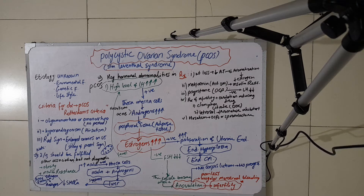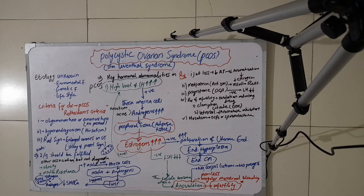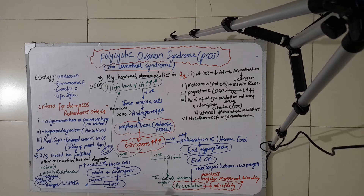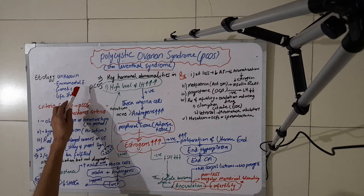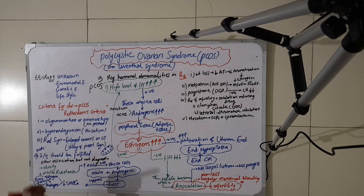In this video I am going to discuss about Polycystic Ovarian Syndrome or PCOS, also called Stein-Leventhal syndrome. The etiology of PCOS is actually unknown — we don't know why this condition happens — but there are some contributing factors which may cause development of PCOS. It could be due to environmental factors, genetic factors, or lifestyle issues like obesity.